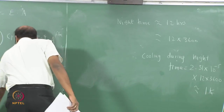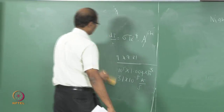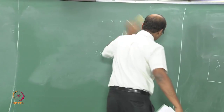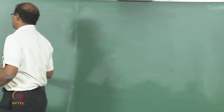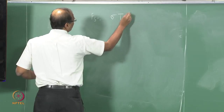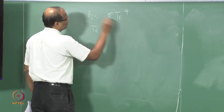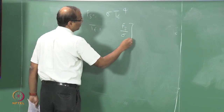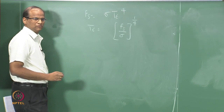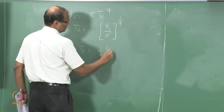Let us do this. In the interest of time, I will start working out. The solar flux density equals sigma T_e to the power of 4. What is the flux density?